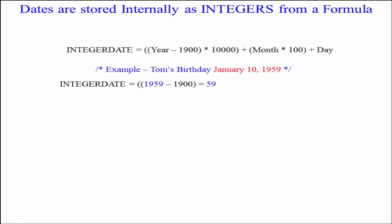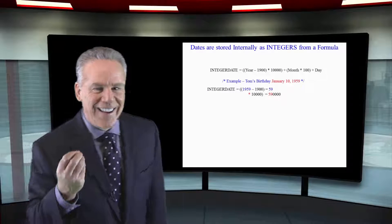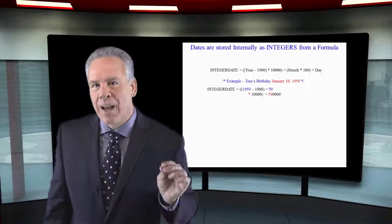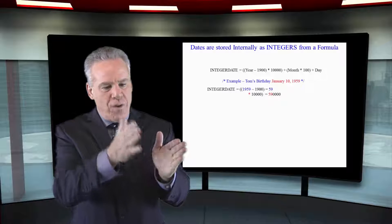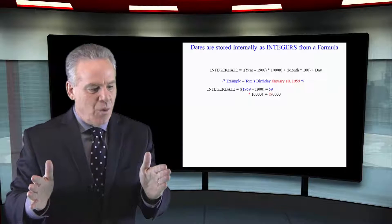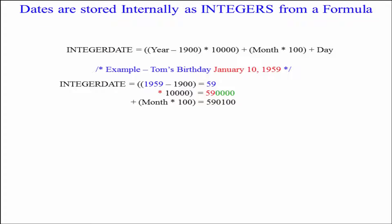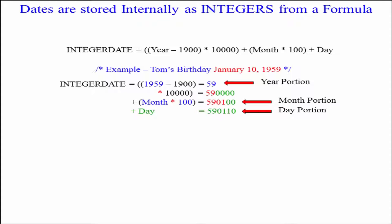Let's take the year 1959, minus 1900 equals 59. Why multiply it by 10,000? So they can put four zeros after the 59 and no other calculation will alter the year. It's already set. Plus January, 01 times 100 — that's going to move 01 to the third and fourth spot. And then they can add the day. That's how they store the dates internally.